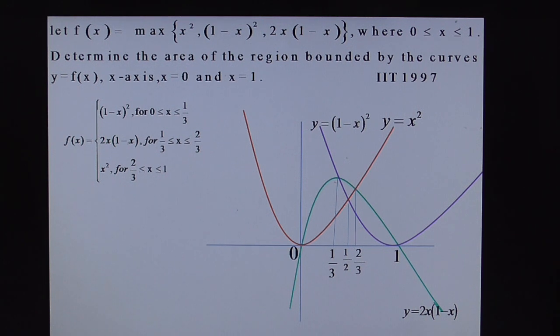Yes from 0 to 1 by 3 the maximum gives 1 minus x whole square. You can observe the graph in the interval 0 to 1 by 3, 1 minus x whole square is the upper part.